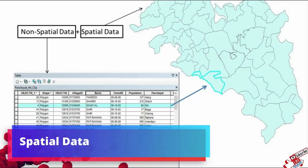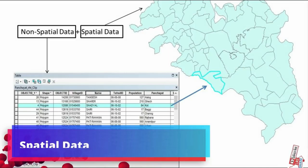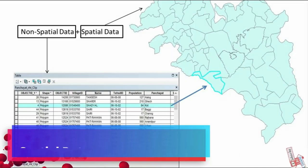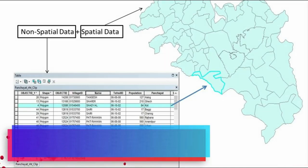For better understanding, here on the top-right hand side you will find the spatial data structure, which is a digitized map. The information of this digital map in the form of a table is representing the non-spatial data structure.